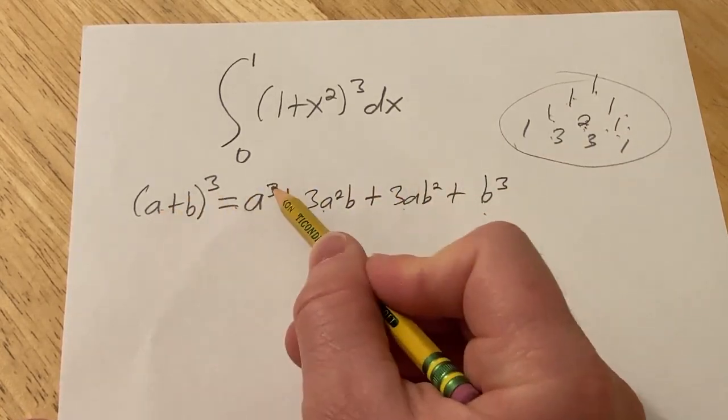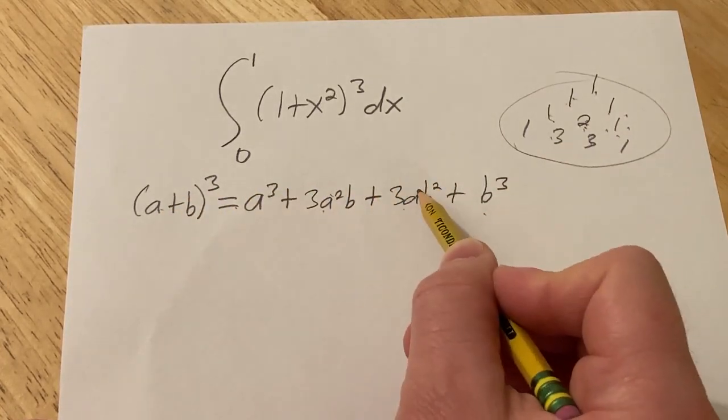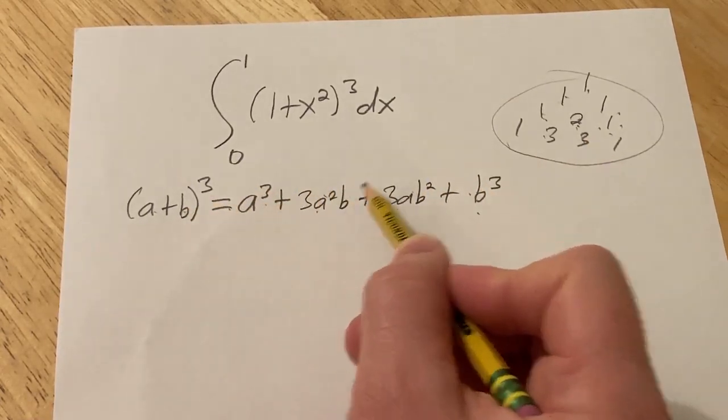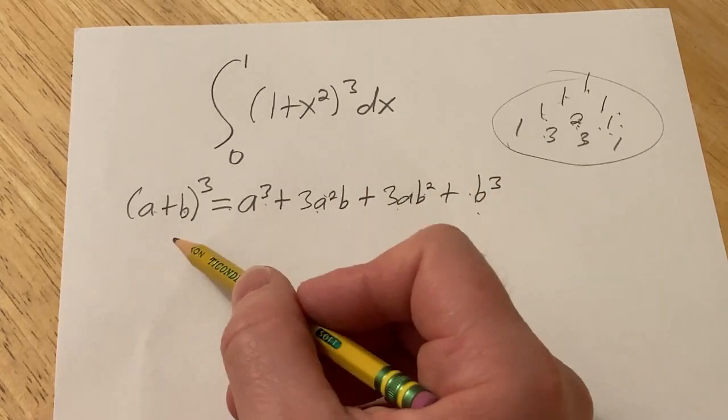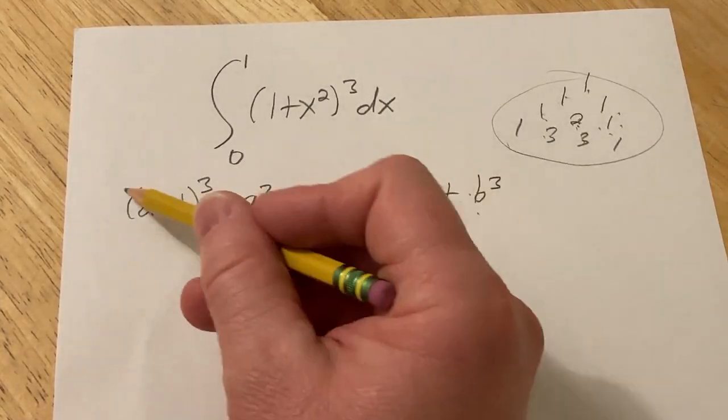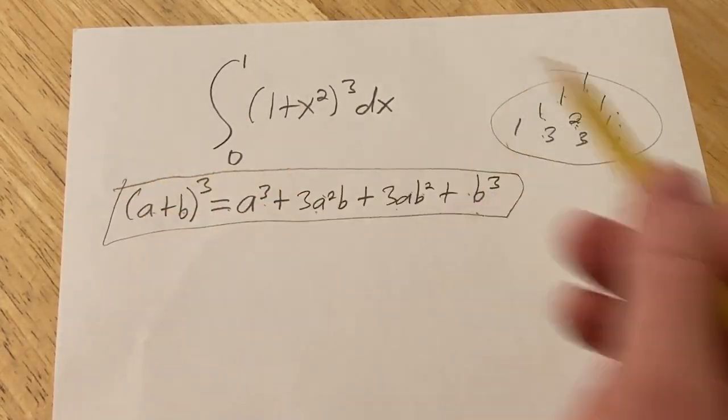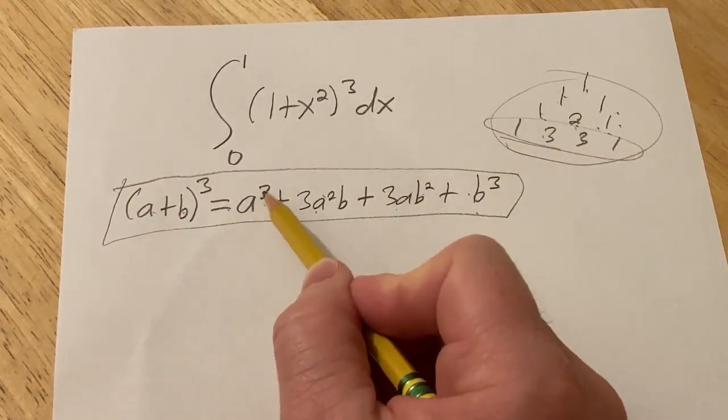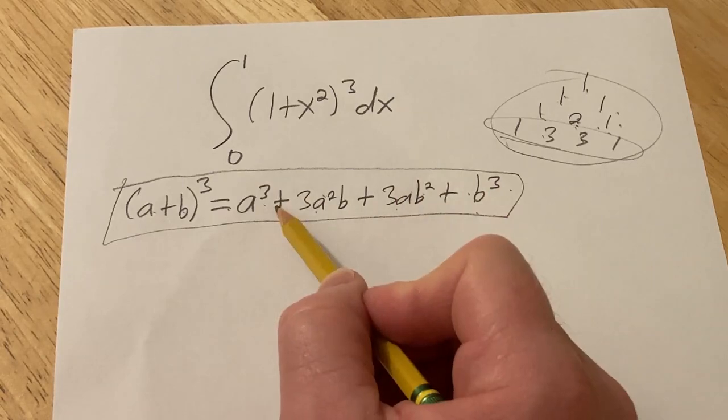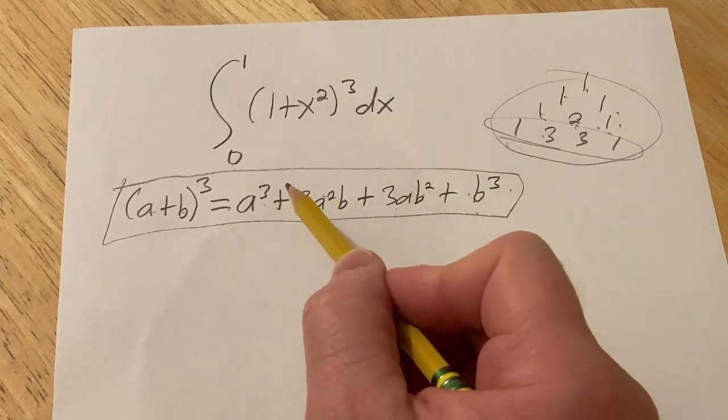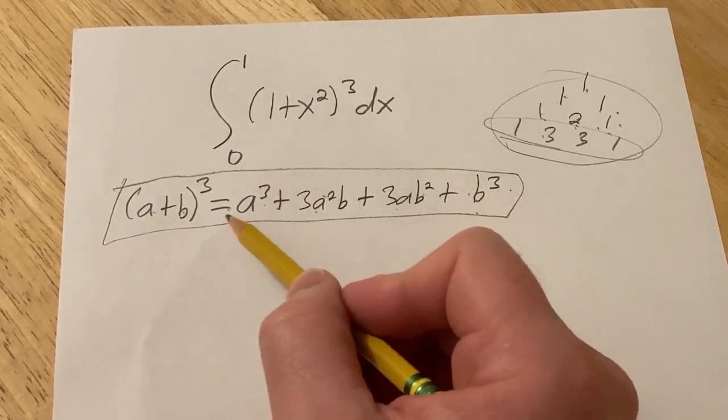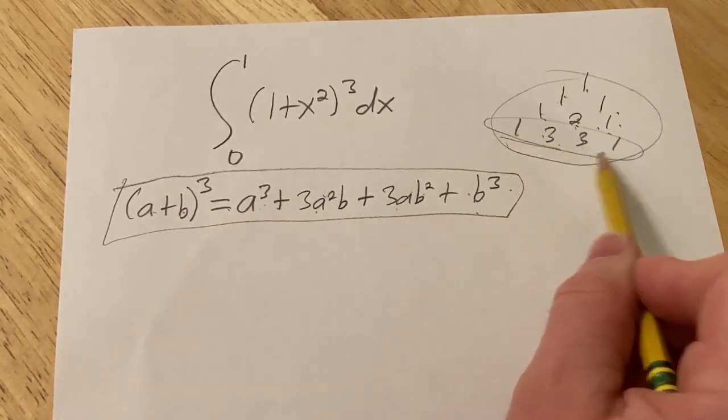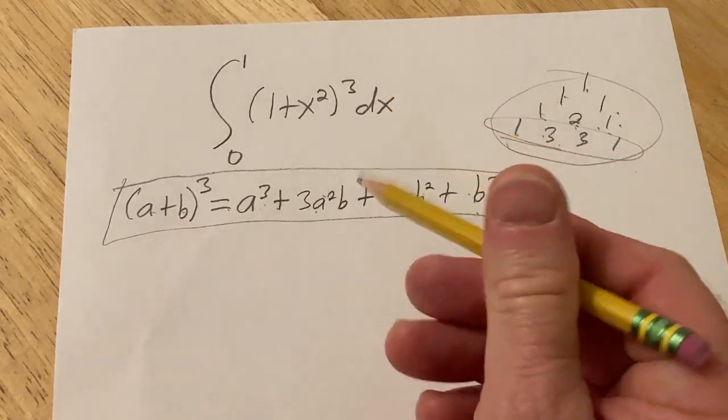And you start with the first term to any cubed. Third power, second power, first power, zeroth power. b to the 0, b to the 1, b to the 2, b to the 3. That's the pattern. Or you can just memorize it. So very useful. I have it memorized at this point. I just know 1, 3, 3, 1, and I know that the a's descend and the b's ascend. So it starts at 3 and it goes down with the a, and then with the b it starts at 0 and it goes up. And I know the pattern is 1, 3, 3, 1. Those are the coefficients.